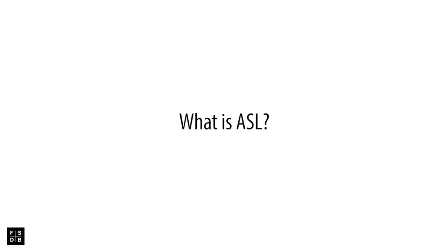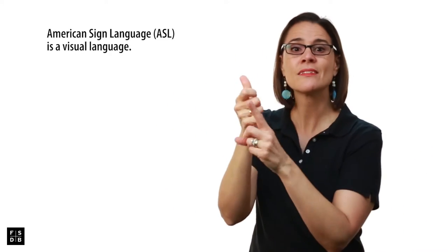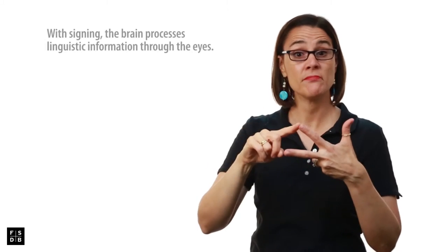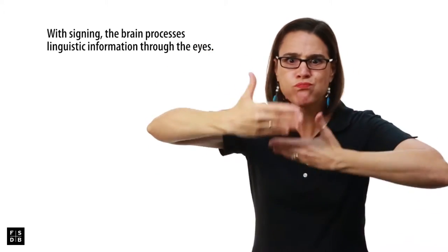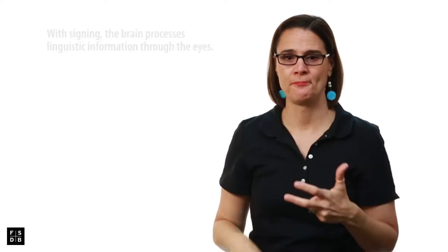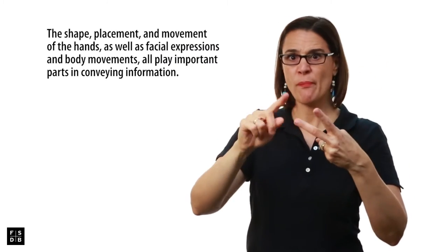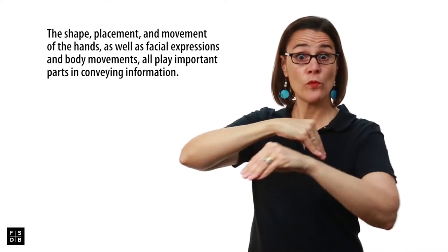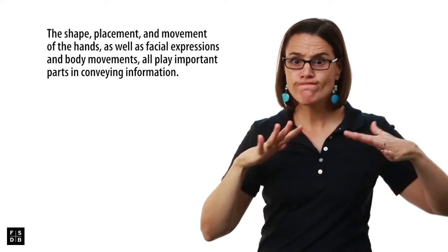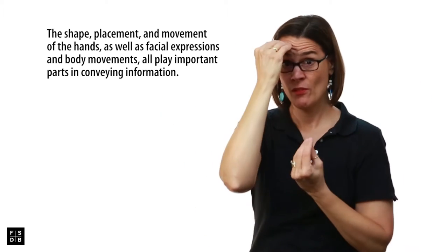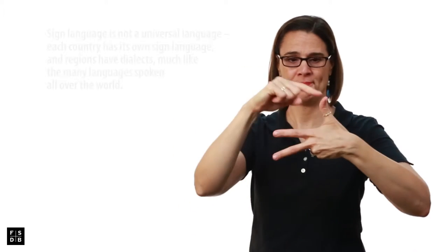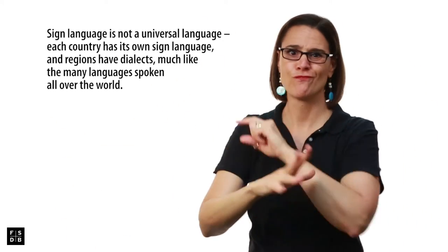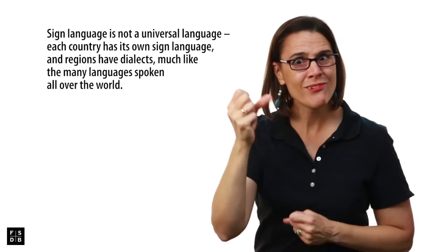What is ASL? Moving forward, I'm going to give you some terminology. The first one is what is ASL. Three points: American Sign Language, ASL, is a visual language. Second, with signing, the brain is processing and learning linguistic information through the eyes. Third, we have handshape, we have placement, we have movement of the hands, as well as facial expressions and body movement. All of these components play an important part in conveying information.